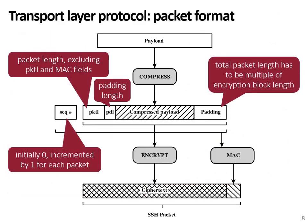Let's take a closer look at how the transport layer protocol of SSH processes packets. First, the application layer payload is optionally compressed. Then, the compressed payload is turned into a fixed-length block ready for encryption. This is done by adding padding and including the length of the padding as well as the length of the packet — which excludes the packet length field and the MAC field. Also, a sequence number is added, which is initialized to zero and then incremented for each packet.